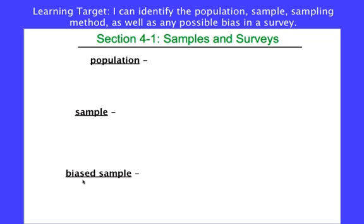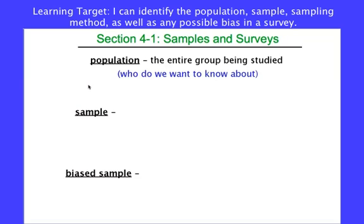Two really important groups of people we want to observe are the population and the sample. Population is the entire group being studied — who do we want to know about. So if we're doing our survey about whether they should serve broccoli in the cafeteria, the entire group being studied is not the United States, not stream students or even upper St. Clair students — it's Fort Couch Middle School.